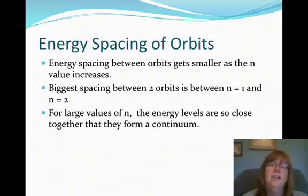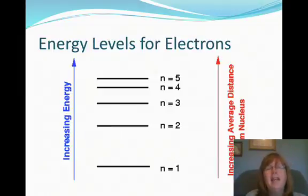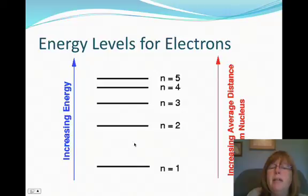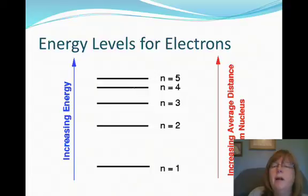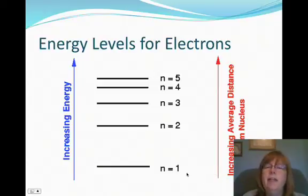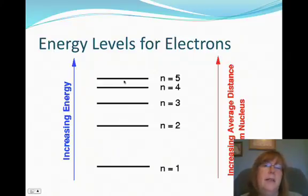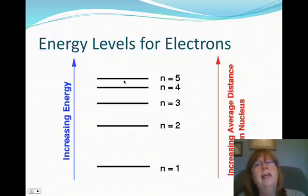Let's talk about the energy spacing of those energy orbits or energy levels. As n gets bigger, the spacing between the orbits gets smaller and smaller. The biggest spacing is between n equals 1 and n equals 2 — that's the biggest difference in energies. When you get to large values of n, the energy levels are so close to one another that you can almost not tell them apart, and we say they form a continuum. Also, as the value of n goes up, so does the distance from the nucleus. An electron in n equals 5 would be farther from the nucleus than one in n equals 2.